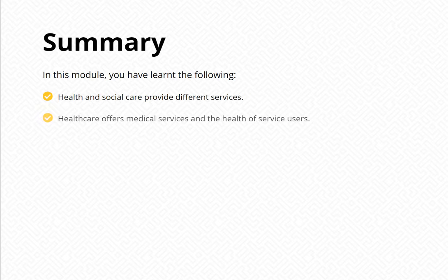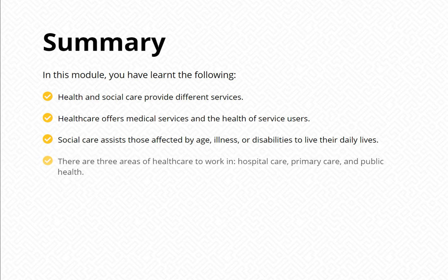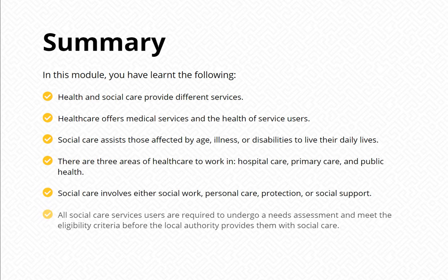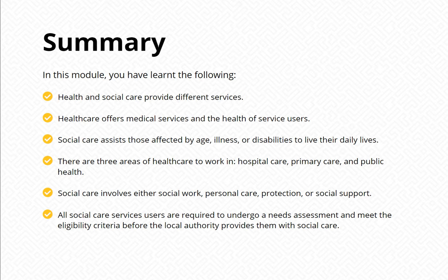In this module, you have learned the following. Health and social care provide different services. Healthcare offers medical services and focuses on the health of service users. Social care assists those affected by age, illness, or disabilities to live their daily lives. There are three areas of healthcare to work in: hospital care, primary care, and public health. Social care involves either social work, personal care, protection, or social support. All social care service users are required to undergo a needs assessment and meet the eligibility criteria before the local authority provides them with social care.